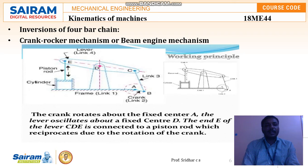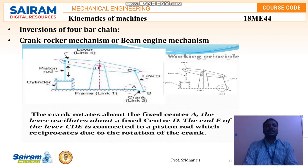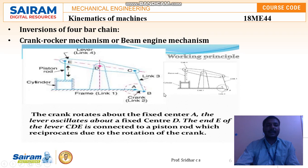In this crank rocker mechanism or beam engine mechanism, we can convert from reciprocating to rotary or from rotary to reciprocating motion. The crank rotates about the fixed center A, the lever oscillates about the fixed center D, and the end E of the lever is connected to a piston rod which reciprocates due to the rotation of the crank.